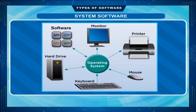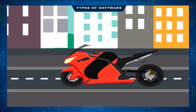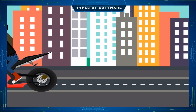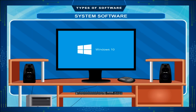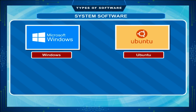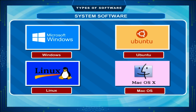Let's understand the operating system with an example of a motorbike. You have a bike with petrol but it does not move by itself until you drive it — you are the operator of the bike. In the same manner, a computer is almost a showpiece without an operating system. The operating system drives the computer and makes it work. Different types of operating systems available in the market include Windows, Ubuntu, Linux, and Mac OS.